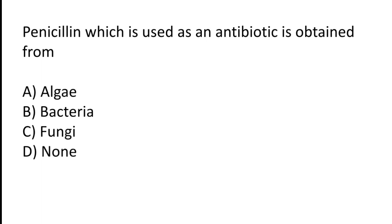Penicillin, which is used as an antibiotic, is obtained from: algae, bacteria, fungi, or none? The correct answer is option C — penicillin, which is used as an antibiotic, is obtained from fungi.